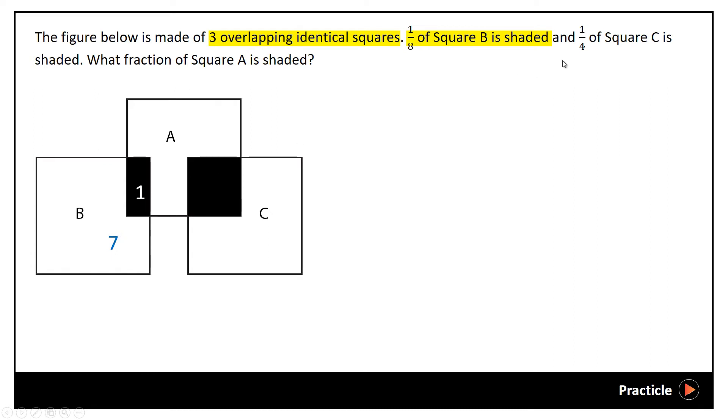And then we also know that 1/4 of square C is shaded. So we know that 1 part out of a total of 4 parts of square C is shaded, meaning that the unshaded part would be 4 minus 1, 3 parts.